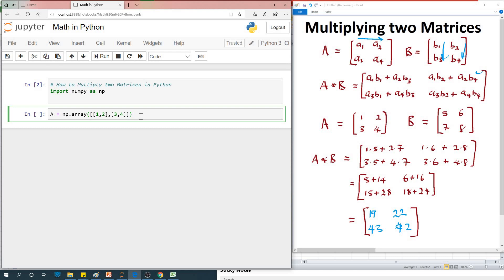B is equal to np.array. In this case we have five, six and the second row is going to be seven, eight. You can give some space to make it beautiful. You specify in rows - this is the first row, this is the second row of each matrix. This is how to create matrices in Python.